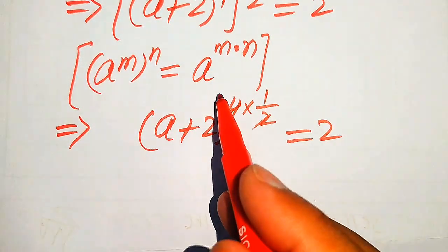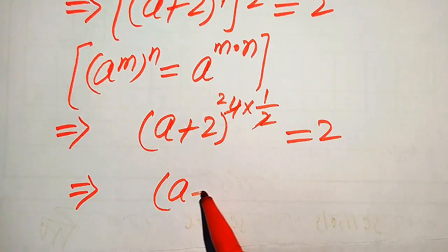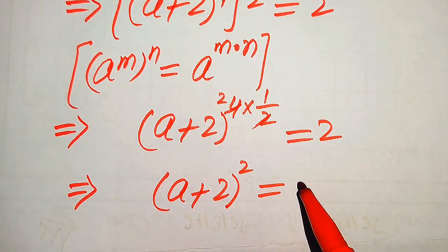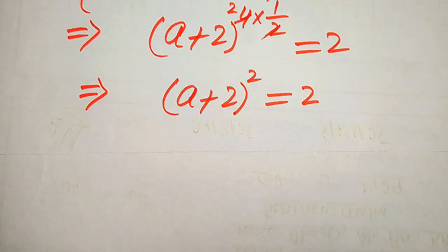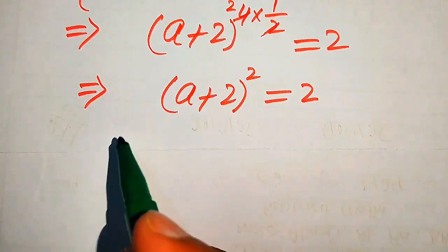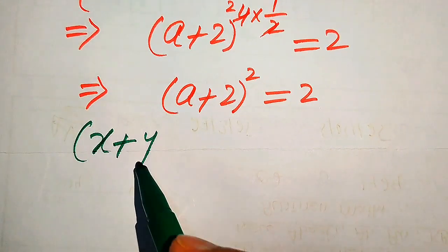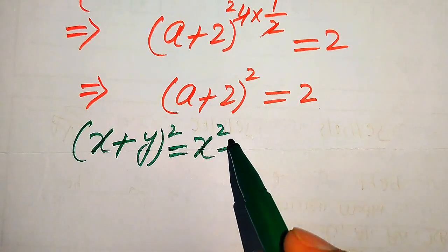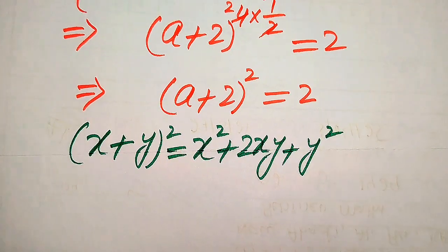According to this rule we multiply the two exponents — 4 multiplied by 1 over 2 — and the 2s cancel, giving us (a+2) to the power of 2 equals 2, that is (a+2) squared equals 2. To expand the square on the left hand side we use the algebra formula: (x+y)² = x² + 2xy + y².